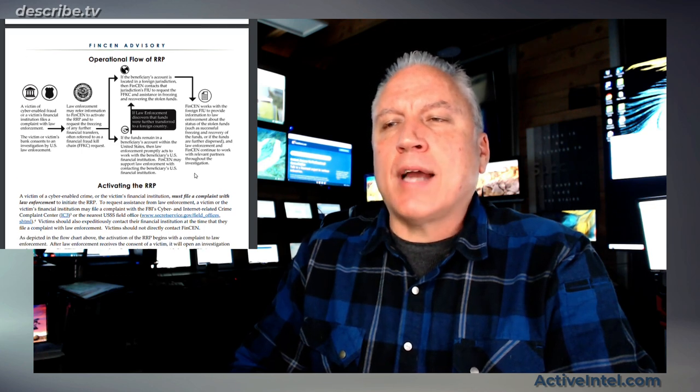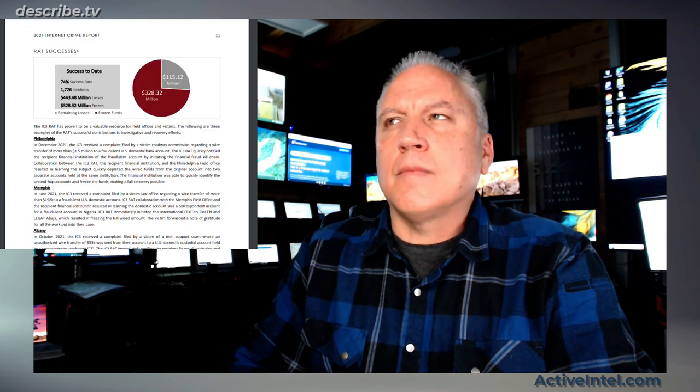What is the success rate? Let's look at the flow first. The victim of the cyber fraud files a complaint with law enforcement. Law enforcement refers it to FinCEN, and then FinCEN works with the FIU — the financial investigative unit — to activate the Rapid Response. When that happens, it goes into the kill chain system, the Financial Fraud Kill Chain.